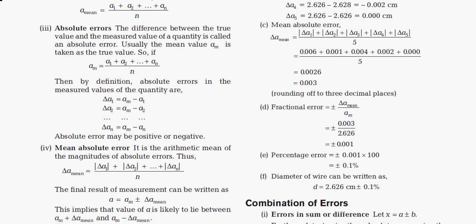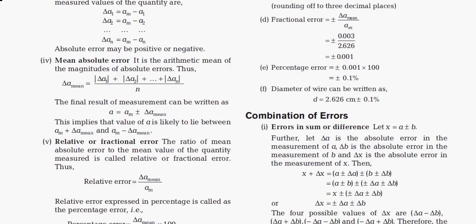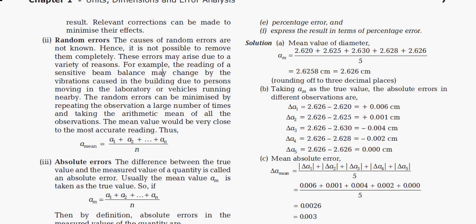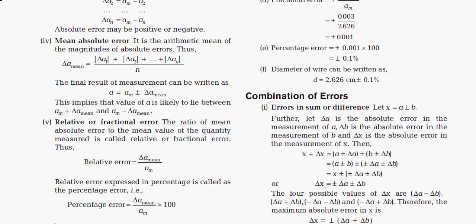Now let's find the mean absolute error. This is the arithmetic mean of the magnitudes of the absolute errors. Remember, since absolute error may be positive or negative, we must take the modulus of each value. The formula is: mean absolute error = (|Δa1| + |Δa2| + ... + |Δan|) / n.